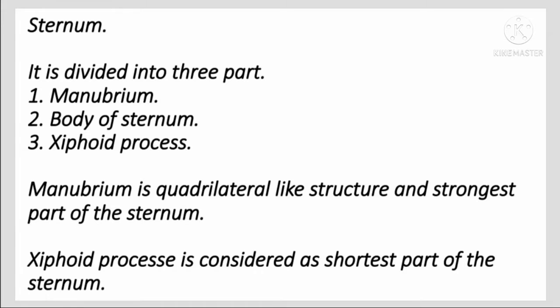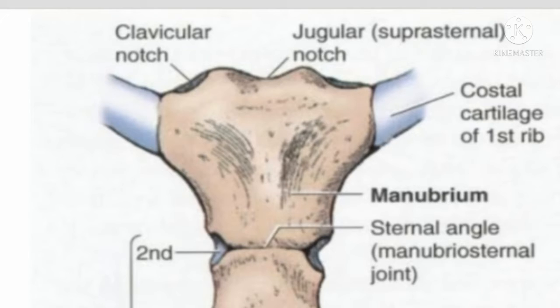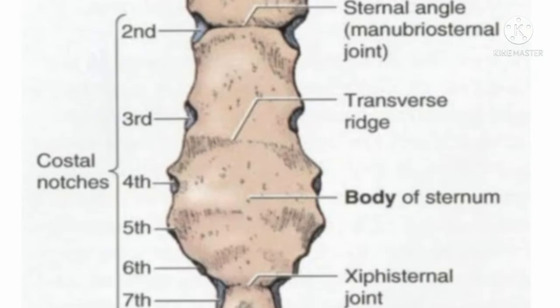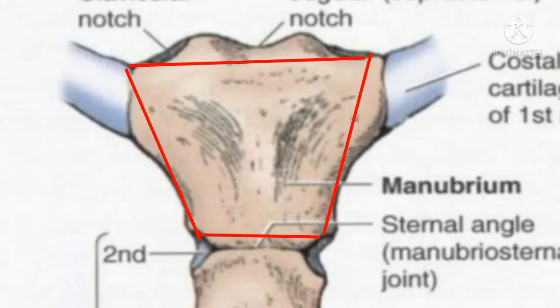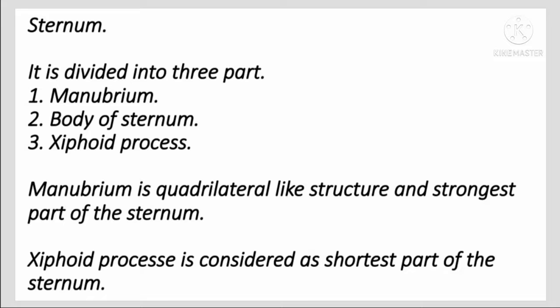Hello everyone. In this video we are going to cover the sternum bone and the ribs. The sternum is divided into three parts: manubrium, body of the sternum, and xiphoid process. The manubrium is a quadrilateral-shaped structure and the strongest part of the sternum.